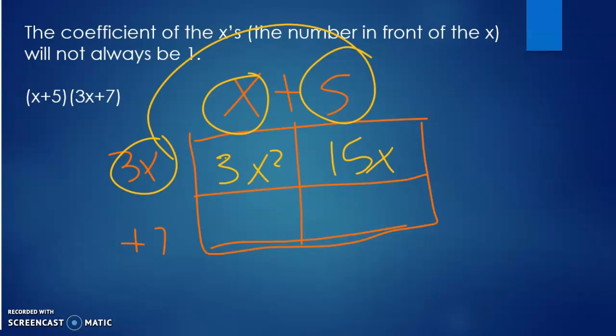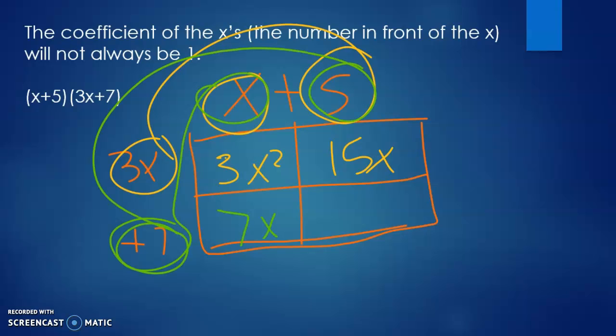I then come down to the next one, and I do positive 7 times x, which is 7x. And positive 7 times 5, which is positive 35. I then go down my diagonals, and so I have 3x squared. This diagonal is plus 22x and plus 35.